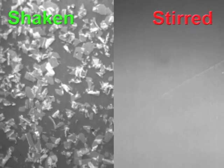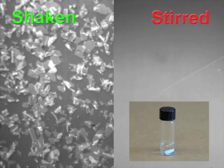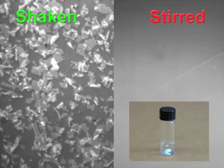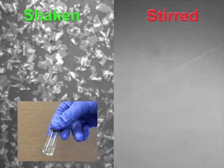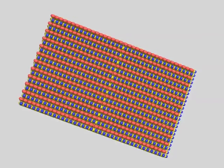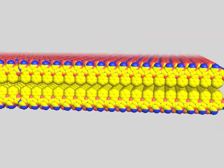But we ran into an interesting problem when we tried to scale these up. We noticed dramatic differences in nanosheet yield depending on whether we stirred the vial or shook the vial, both containing the same aqueous peptoid solution. So for answers, let's look at the molecular structure of the nanosheet.